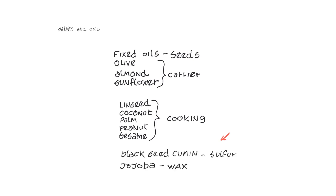Other seed oils like black seed cumin are high in sulfur and can energize a carrier, but should be below 10% of the blend. Another seed oil, jojoba, is rich in natural emollient waxes. Essential oils require carriers of fixed oils to prevent them from volatilizing off of the skin.